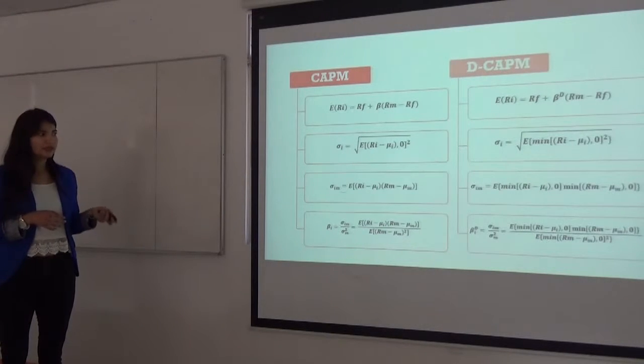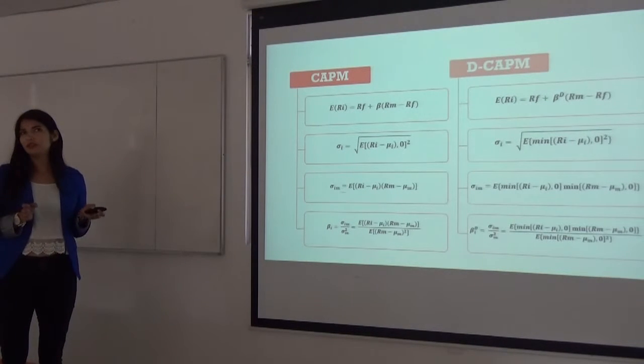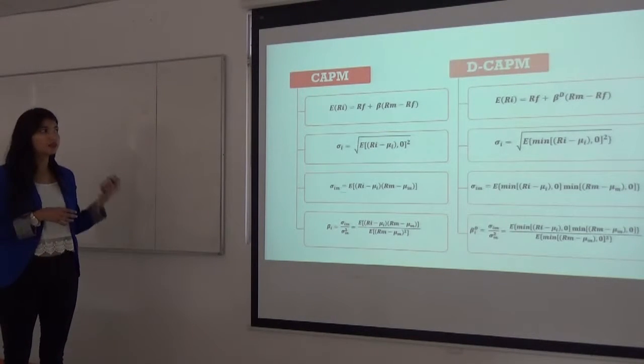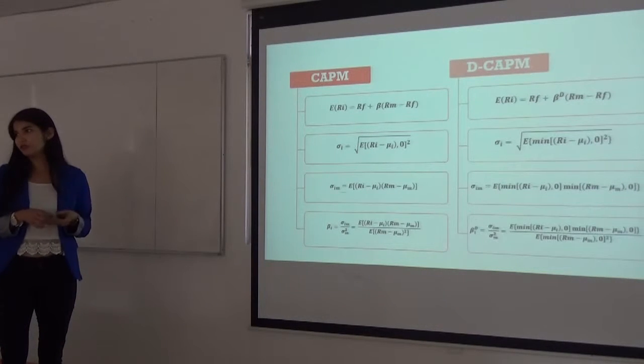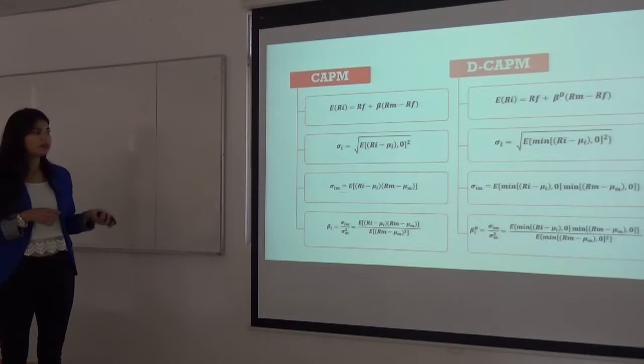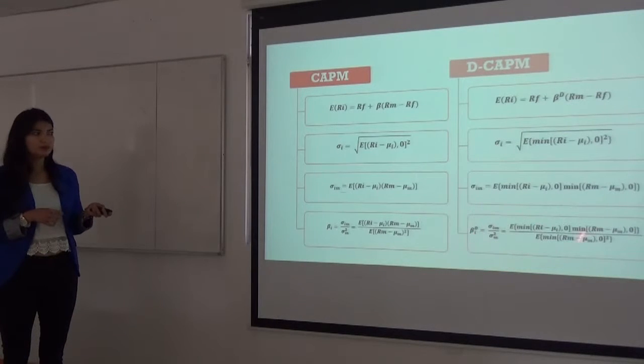Because in the DCAPM model, only the negative fraction of the yields are incorporated in the calculated returns. So, this is representing the function for the minimum function.